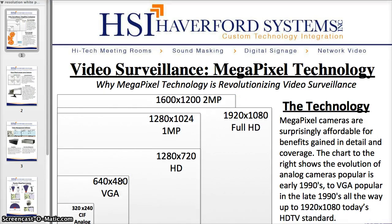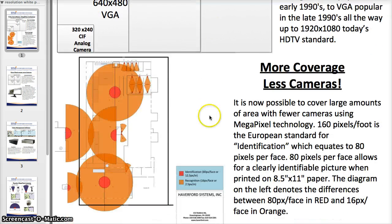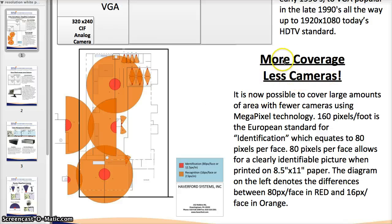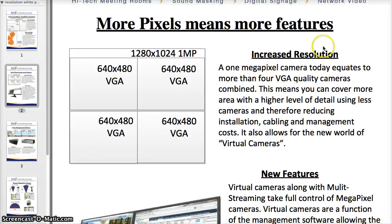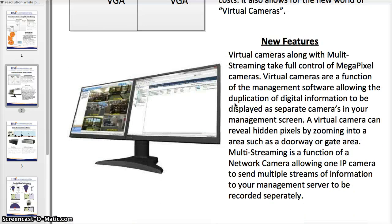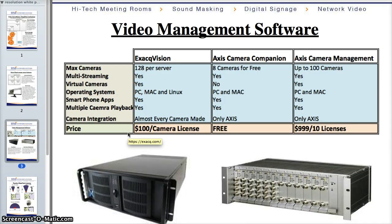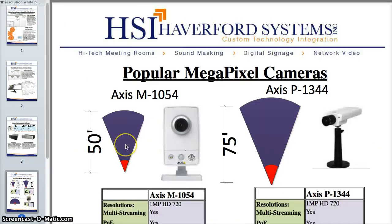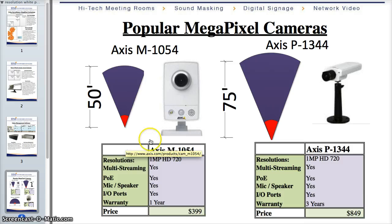Hello and welcome to Haverford Systems Review for Video Surveillance Megapixel Technology. In this presentation we're going to talk about why megapixel technology is revolutionizing video surveillance, what pixels actually mean, how fewer cameras are getting more coverage, the increased resolution and what that means for upgrading from analog to digital, the new features of virtual cameras and multiple streams with IP technology, video management software available today, and the most popular megapixel cameras transforming the industry.